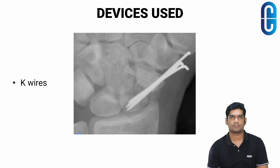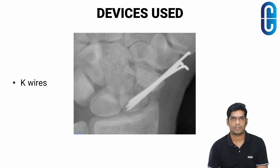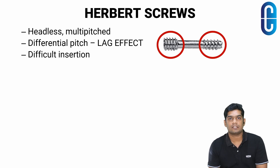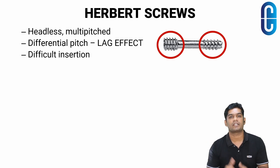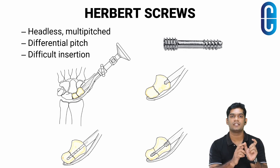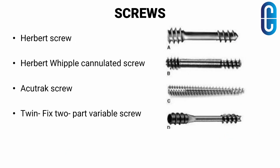Various devices can be used for fixation of the scaphoid. K-wires can be used because of their ease of insertion, but the downside is lesser stability and lack of compression. Herbert screws are headless cannulated multi-pitch screws with differential pitch between the leading and trailing end, which produces a lag effect and provides inter-fragmentary compression, though they are difficult to insert. A specific jig is used for Herbert screw insertion. Other screw types include Herbert-Whipple cannulated screw, AccuTrack screw — a fully threaded screw with differential pitch — and TwinFix two-part variable screw.